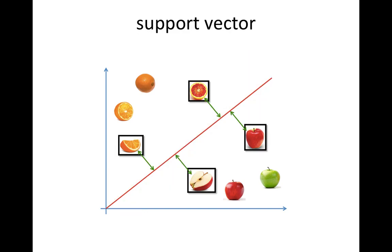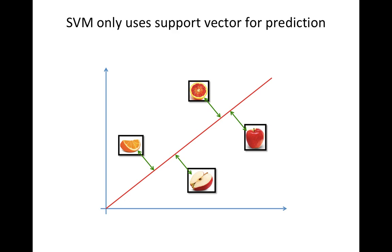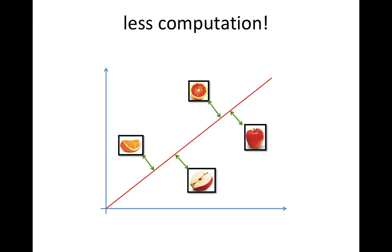And we call the nearest data as support vectors. Importantly, SVM only uses support vectors when it makes predictions. That is a huge advantage, having much less computation. So far what I covered is linear SVM.